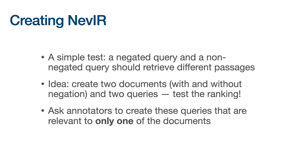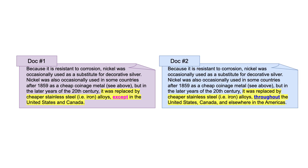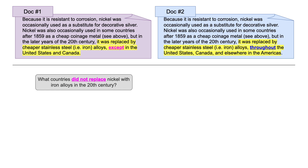Let's look at some examples to make this concrete. We start by taking documents from the Conda QA dataset, which contains documents scraped from the web that contain real-world negation, like a document containing the negation word 'except.' We then asked crowd workers to affirm the negation — in this case, document two replaced 'except' with 'throughout,' affirming the negation. So now we have two documents that are identical except for the negation. We ask crowd workers on Mechanical Turk to annotate queries relevant to only one of the two documents. For example, 'what countries did not replace nickel' is only relevant to the first document, which talks about countries that didn't replace nickel, while document two is not relevant.